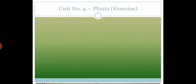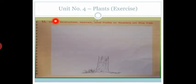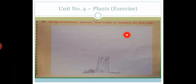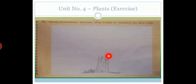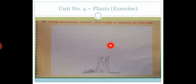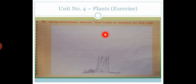Now the last question, question number 10: draw branches, leaves and fruits or flowers on this tree. This is your homework and you have to draw the complete picture of a tree. You have to draw the leaves, fruits and flowers on this tree. And you have to color it beautifully.